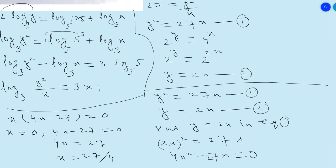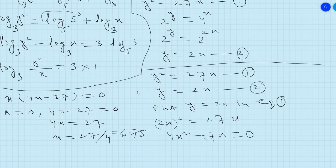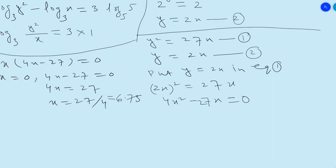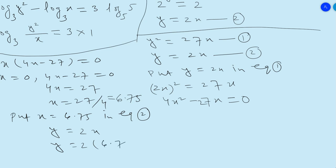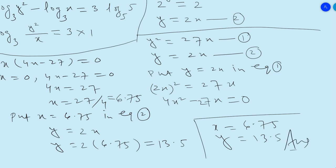27/4 calculated with a calculator gives x = 6.75. Now we find y by substituting x = 6.75 into equation 2: y = 2x = 2 × 6.75 = 13.5. So our final answer is x = 6.75 and y = 13.5.